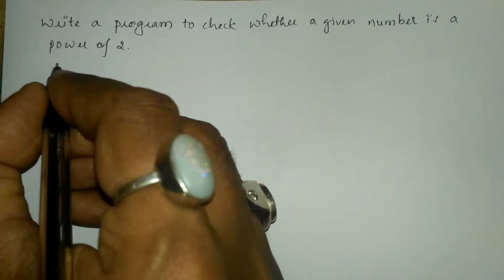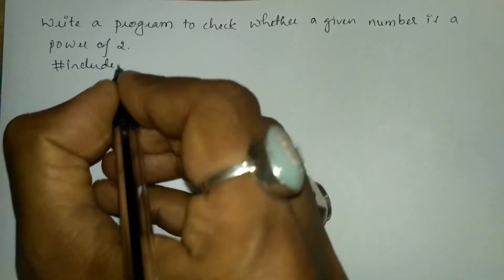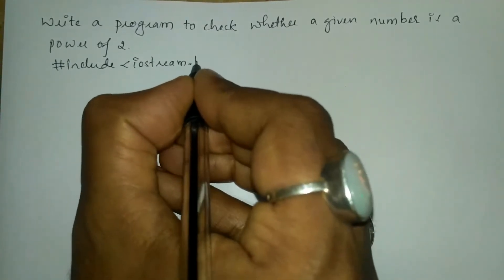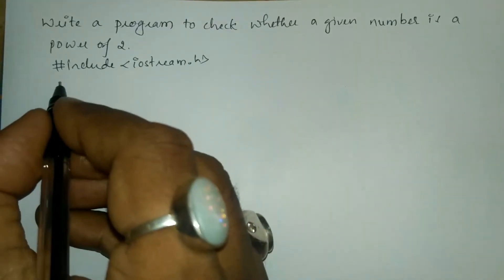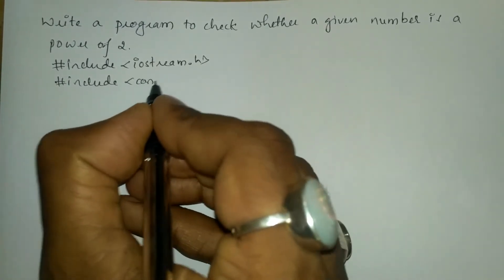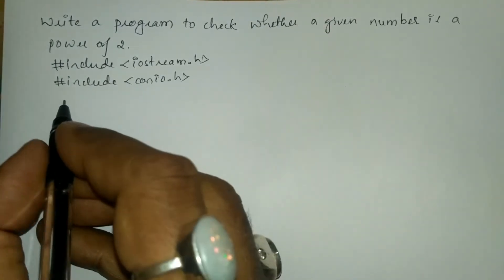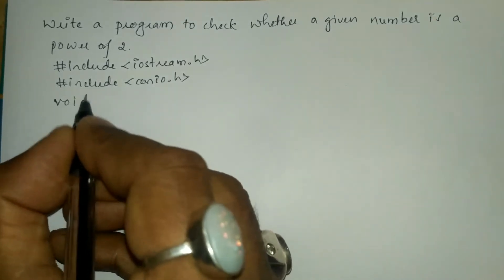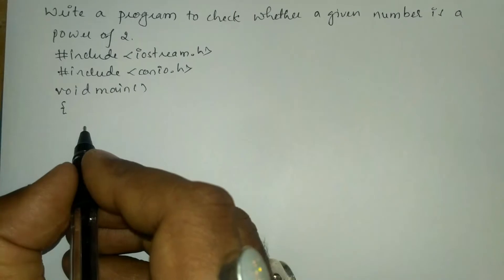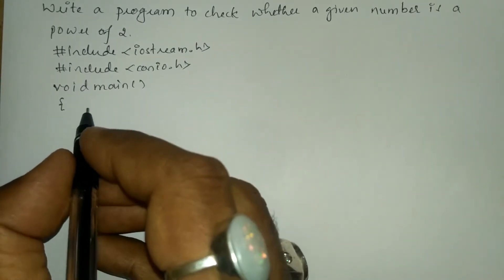Now let us write the preprocessor directives: hash include in an angular brace we will write iostream.h header file, and the next preprocessor directive is hash include in an angular brace we will write conio.h header file. Now let us write the void main function with a curly open brace, and here in the declaration section I am going to declare all the variables.